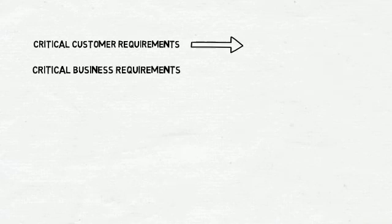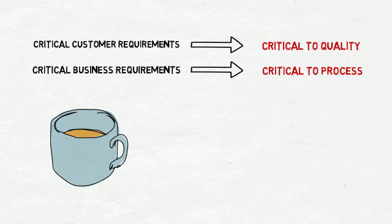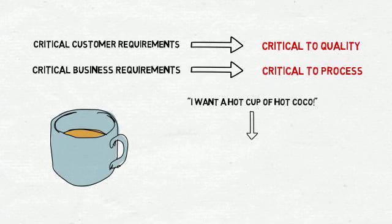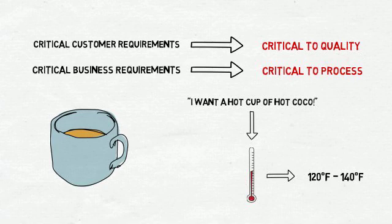Once critical customer and critical business requirements have been identified, translate these requirements to critical to quality and critical to process measures. For example, think about customer expectations for a cup of hot chocolate. The voice of the customer could be: 'I want a hot cup of hot cocoa.' Think about how you could measure this necessity to be hot and obtain the critical customer requirement. Most likely, you would use a thermometer to measure temperature. Finally, you need to attain the right specifications or critical to quality terms to deliver the expected product. You may decide a temperature between 120 degrees and 140 degrees does the trick.